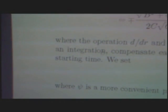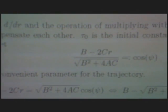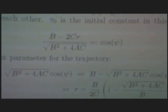Where the operation d by dr and the operation of multiplying with dr and summing up, which is called integration, compensate each other. Tau 0 is the initial constant in this summation process, that is to say a starting time. We get as a definition: b minus 2cr over square root of b squared plus 4ac is equal to cosine psi.